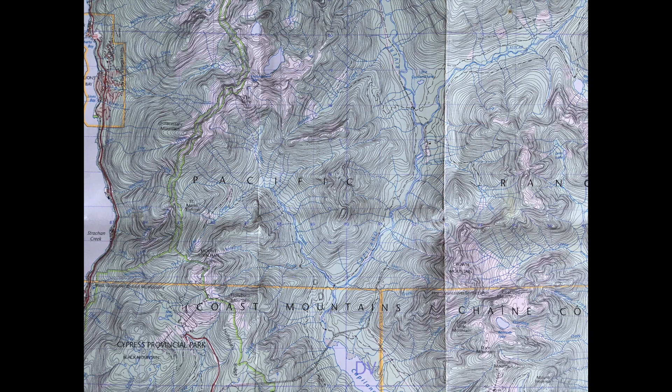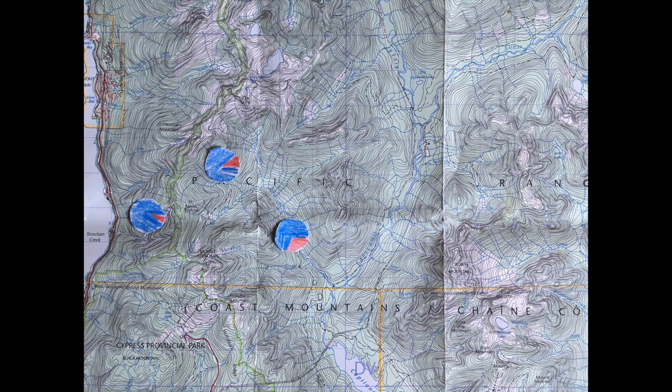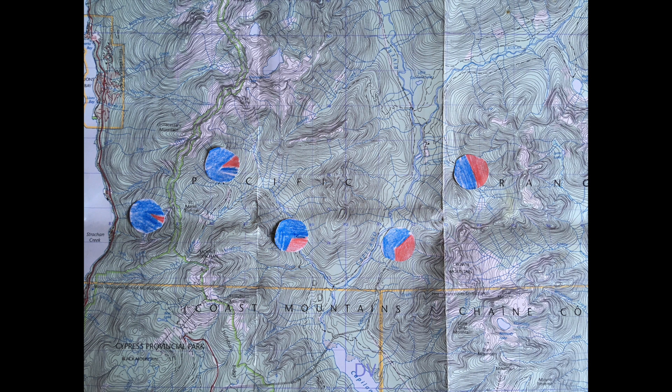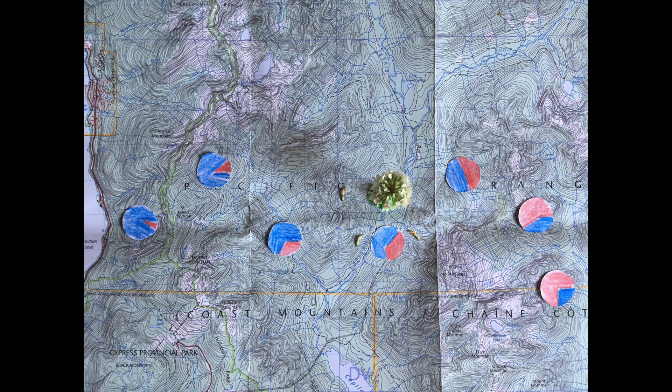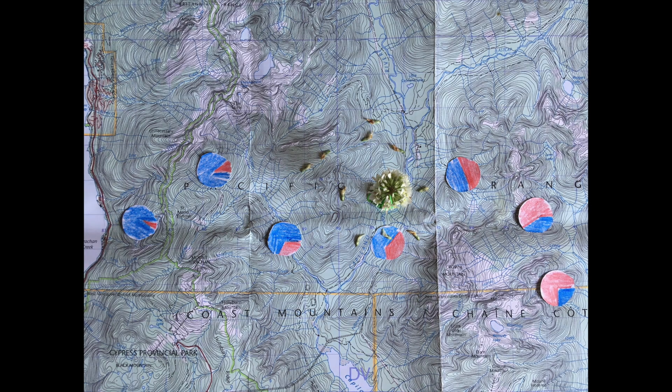When we go out and measure genetic variation on the landscape, we often see strong spatial patterns. These patterns are the result of, one,